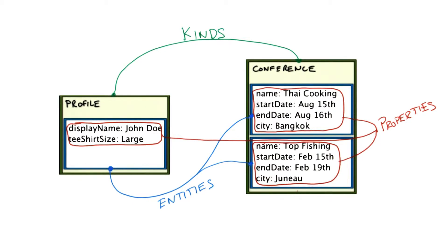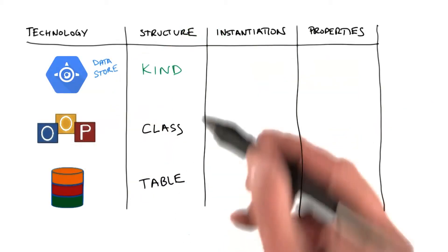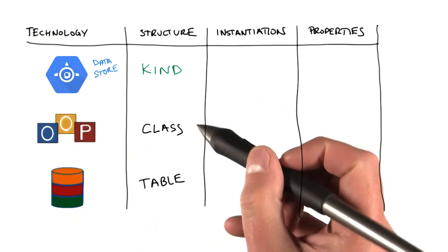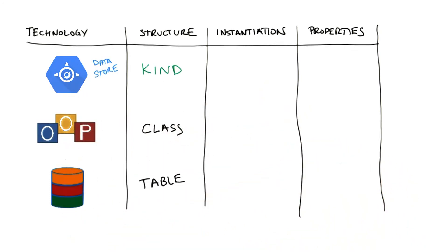In fact, you can also find similarities with relational database modeling. Let's look at the table that summarizes these things. So, a kind in App Engine Data Store can be thought of as a class in object oriented programming and as a table in relational database modeling.